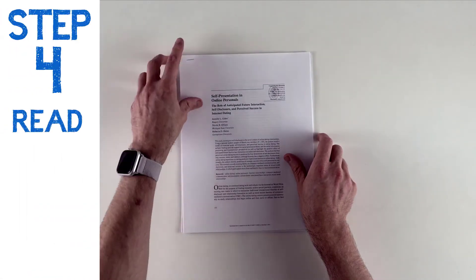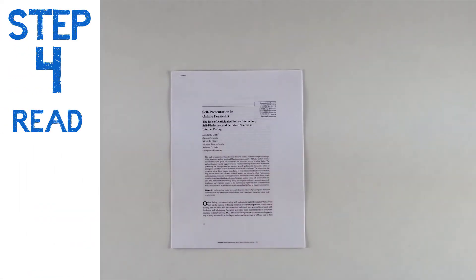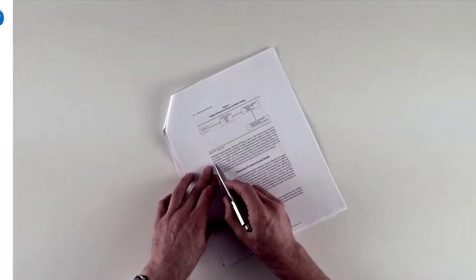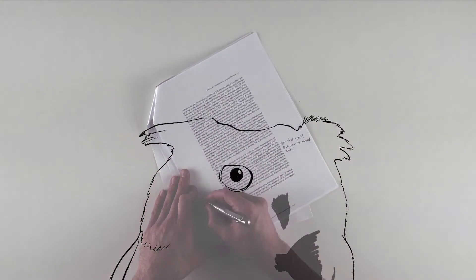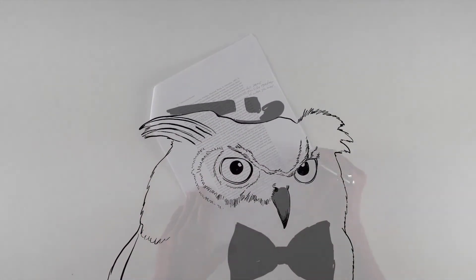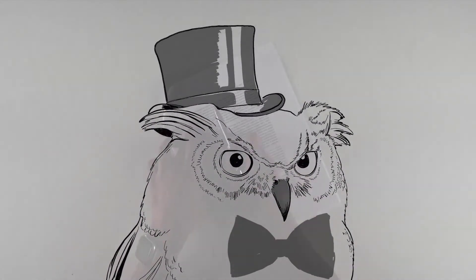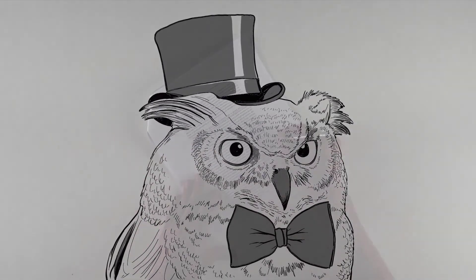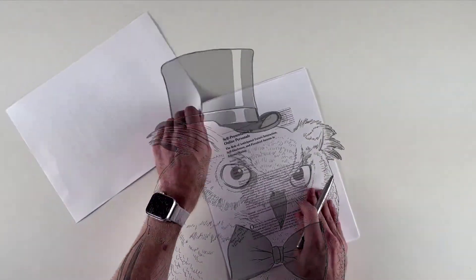Step 4: Read every article you're planning to actually use. This is the only way to know for sure if an article has something useful to offer. It's like going on a bunch of dates before getting married — it can reveal the kinds of details that are both important and invisible at first glance, like a hatred of owls in formal wear. Because they're adorable!